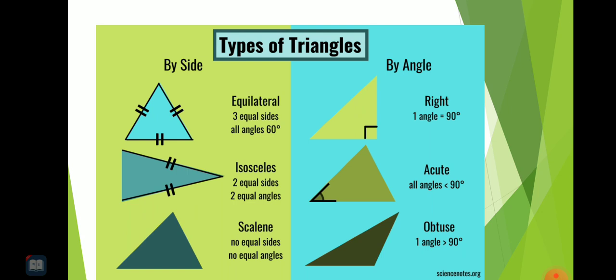Then comes right triangle. In right triangle, there is only one angle equal to 90 degrees.